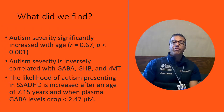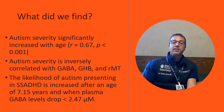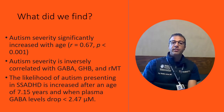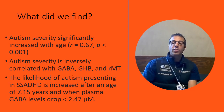Our main findings: in subjects with SSADH deficiency, the severity of autism significantly increases with age, but is inversely correlated to various inhibitory biomarkers such as GABA, GHB, and the resting motor threshold measured by transcranial magnetic stimulation.